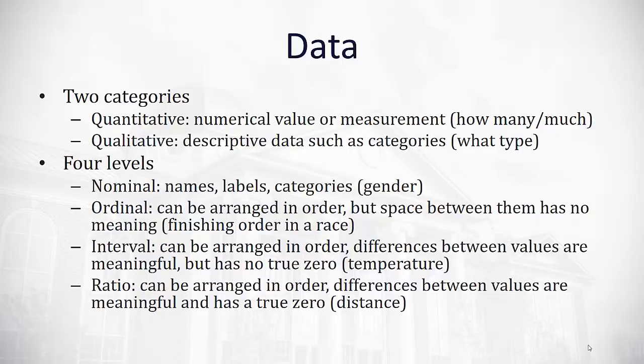Contrast that with ratio data. Ratio data can be put in order. The differences in values have meaning and it has a true zero. An example of a true zero would be something like distance. You can be zero miles away from home if you're in your home. Zero has true meaning meaning a lack of distance between you and your destination. This is an example of ratio data.